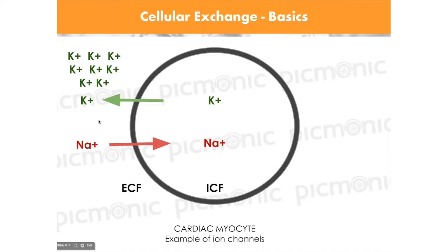If there's a ton of potassium outside the cell, the potassium inside isn't going to freely keep leaving — it will back up inside the cell and you'll end up with a whole bunch of potassium: hyperkalemia. We're going to revisit this concept at the very end to tie everything back together and show another mechanism of how this works.